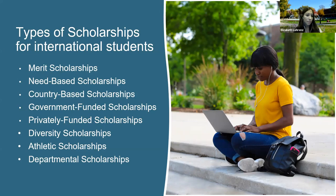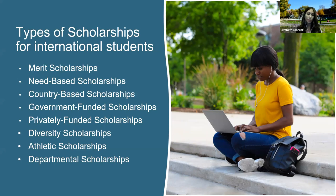The second type is a need-based scholarship. This could be for students who are high academic achievers but also have high financial need. Each university has a different process: some require you to submit a form with your financial information, others just need an email to the admissions counselor explaining your financial situation, and others may request the College Board CSS profile, which is a more detailed application form clarifying your financial need.